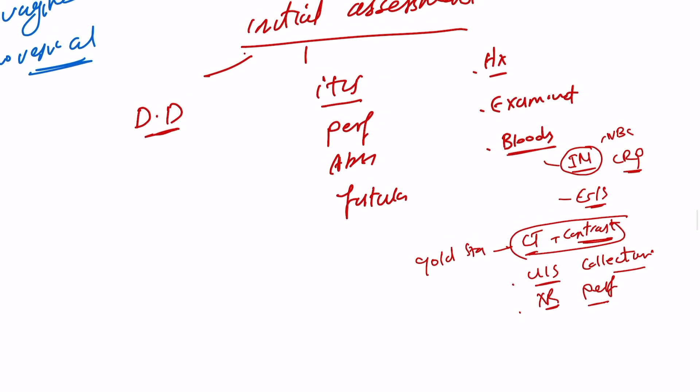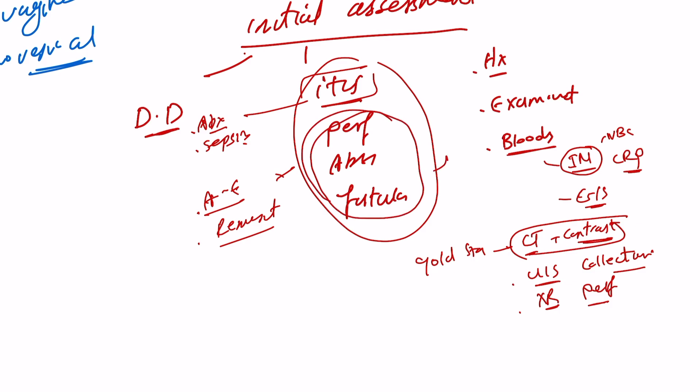We also need, if the patient's coming in unwell, obviously we need to follow an A to E approach, and also do our resuscitation to our patient. So that will be our initial assessment, and based on the presentation, we need to manage our patient. So for example, if it's diverticulitis, they will need to be on antibiotic, and to be dealt with as a sepsis condition. If it's perforation, abscess, and fistula formation, we need to resuscitate them, start them on antibiotic, and consider surgery as appropriate, based on their condition.